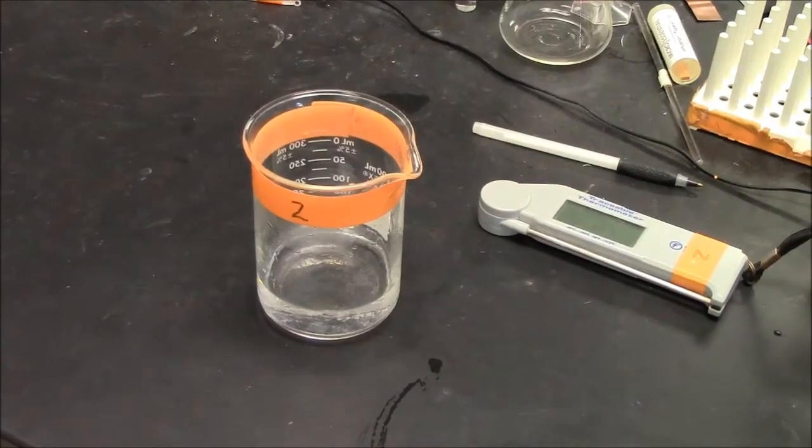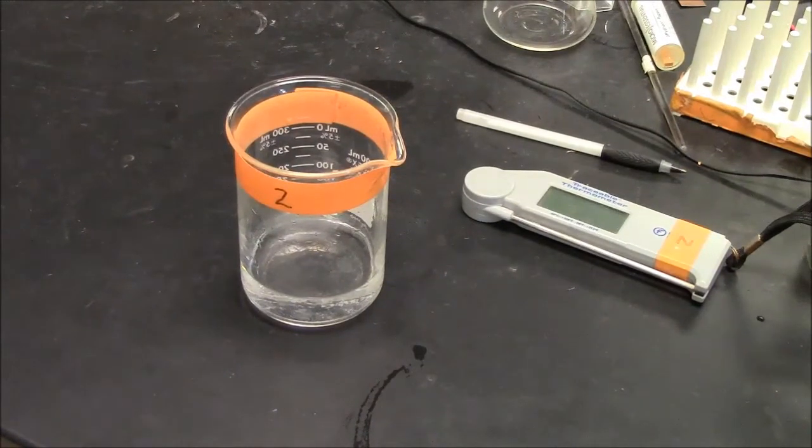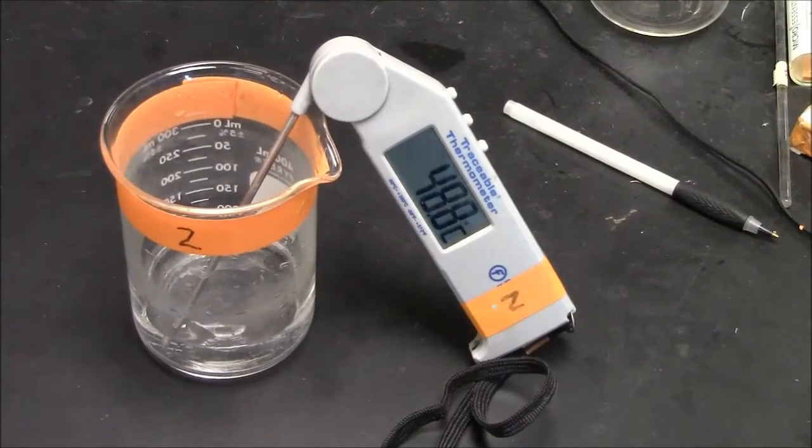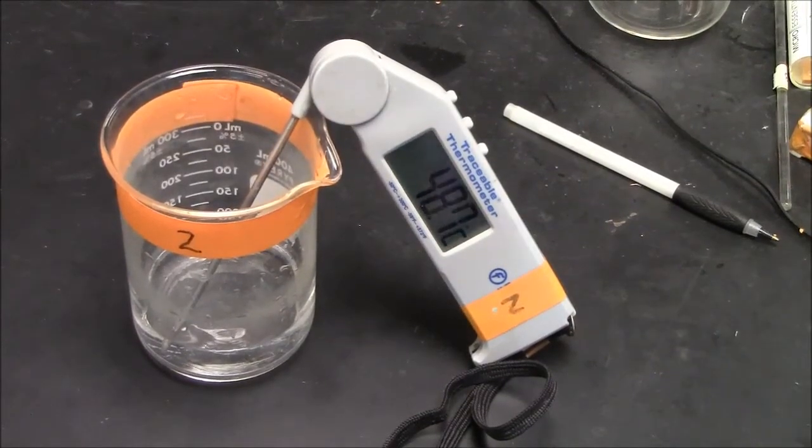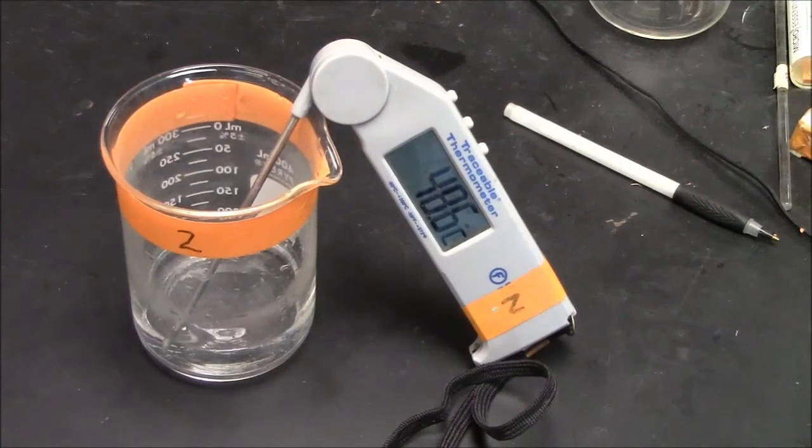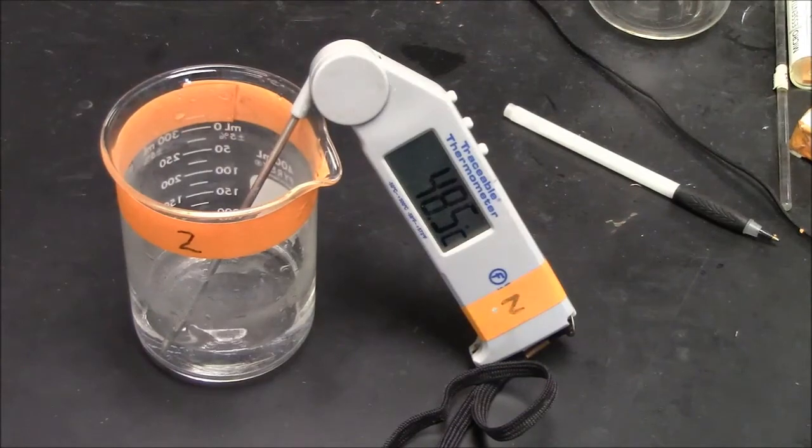To test that, we can use a warm water bath which will exceed the phase transition temperature, and then we may see evidence of polymerization. Here I have a water bath about 48 degrees, and I will immerse the polymer, or the suspected polymer, in this warm water bath to see what I get.